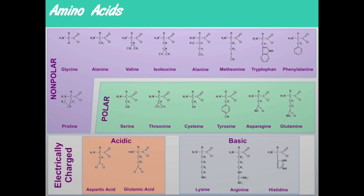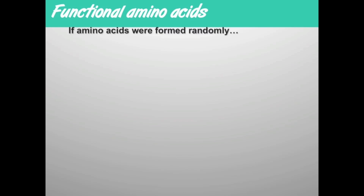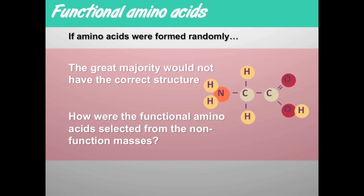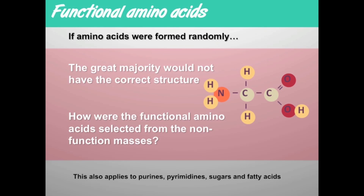Functional amino acids have to have the specific structures we described. If they were formed randomly, the great majority would not have the right structure. How are the functional amino acids selected from that mass of non-functional amino acids to produce functional proteins? This also applies to purines, pyrimidines, sugars, and fatty acids that are used to produce nucleic acids, carbohydrates, and fats.